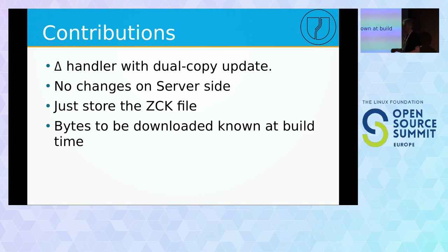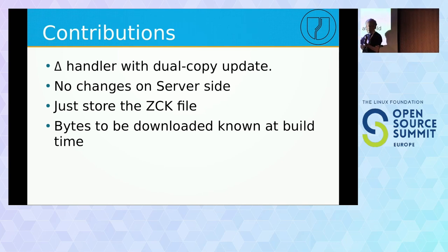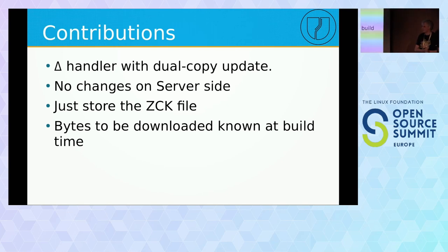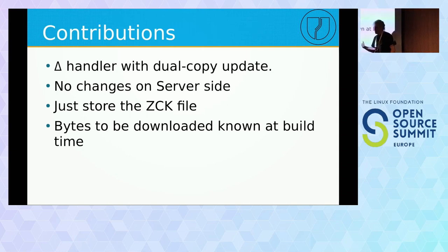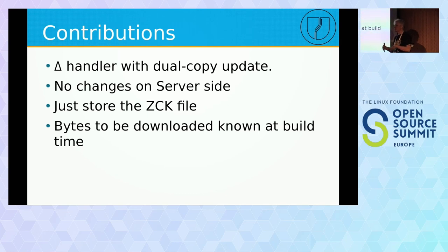X-delta applies the delta in memory, requiring too much memory for embedded devices. This is also the reason I changed how ZChunk works — instead of applying in memory, it writes directly to the destination. So far fewer resources are required. The main observation is that it takes time to calculate the delta because the entire running software must be read and processed with the rolling hash.